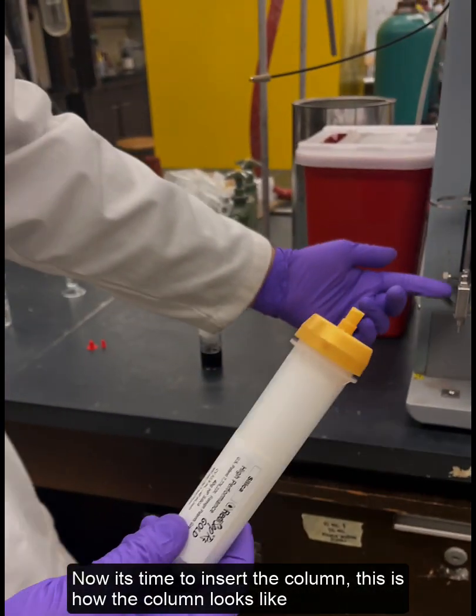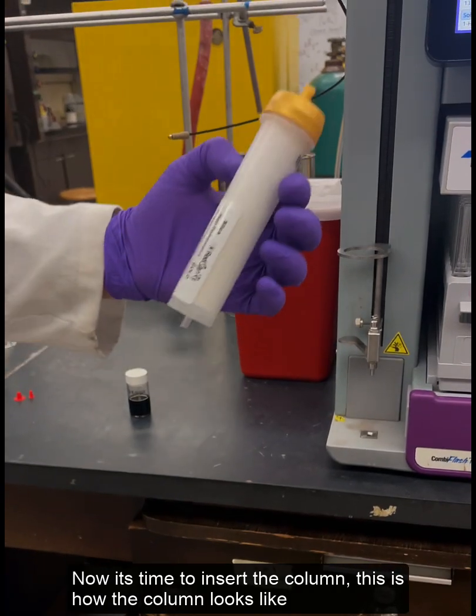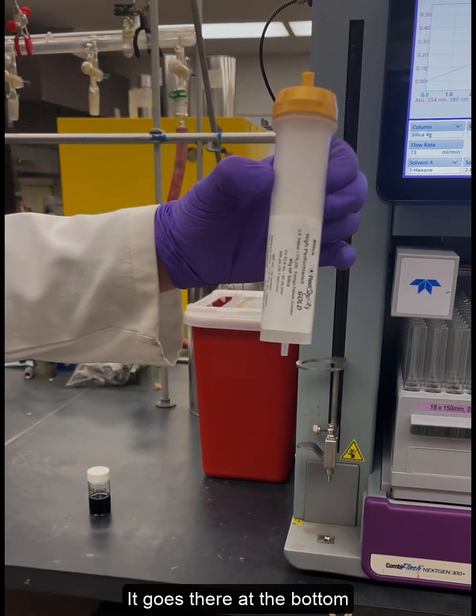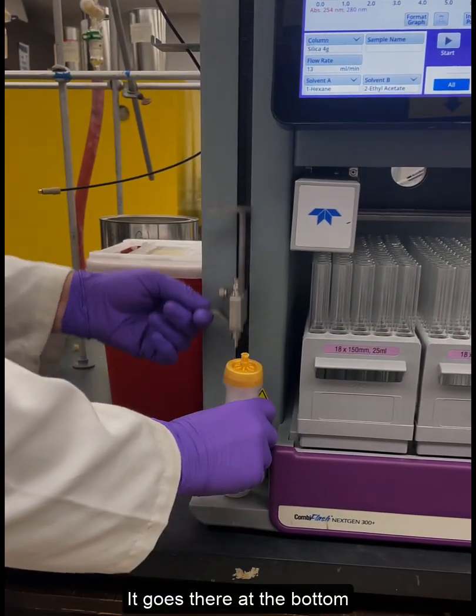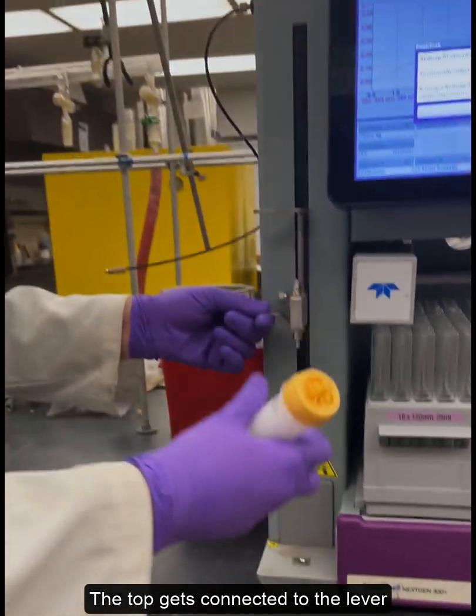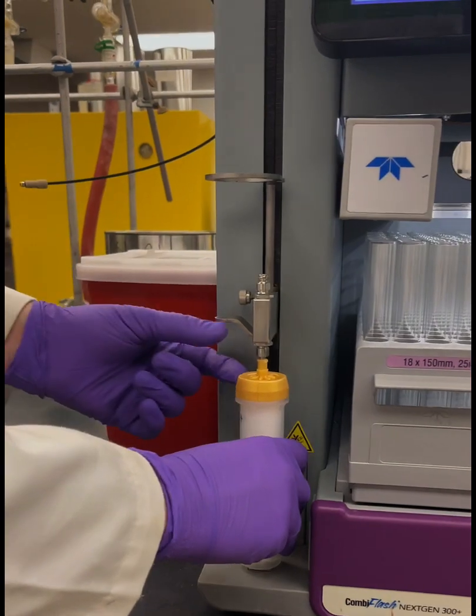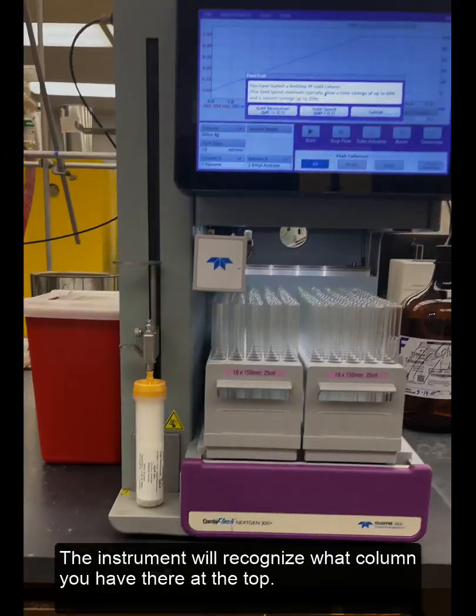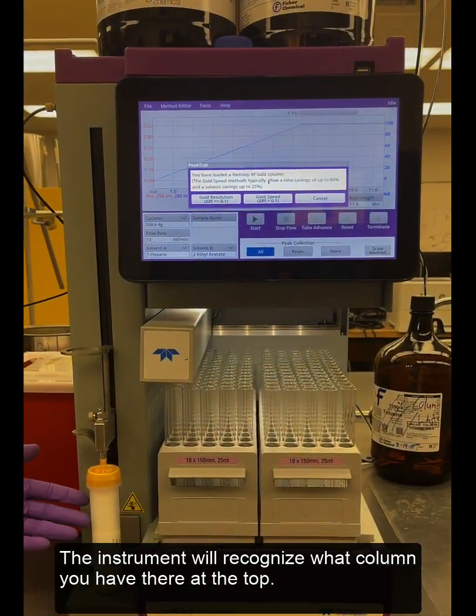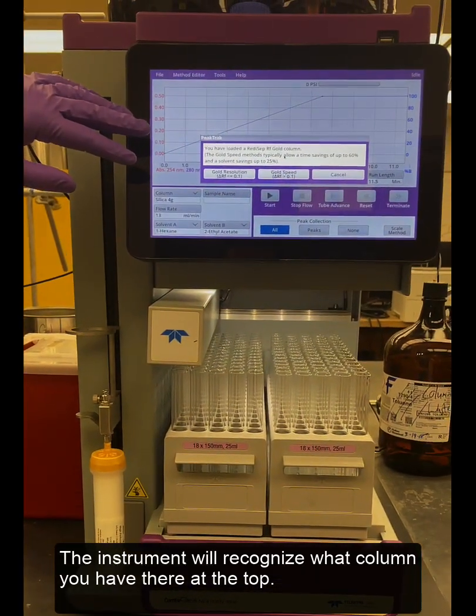It's time to insert the column into the instrument. This is how the column looks like. It goes there at the bottom as you can see, and then the top will get connected to the lever. The instrument will auto-recognize what kind of column you have there at the top.